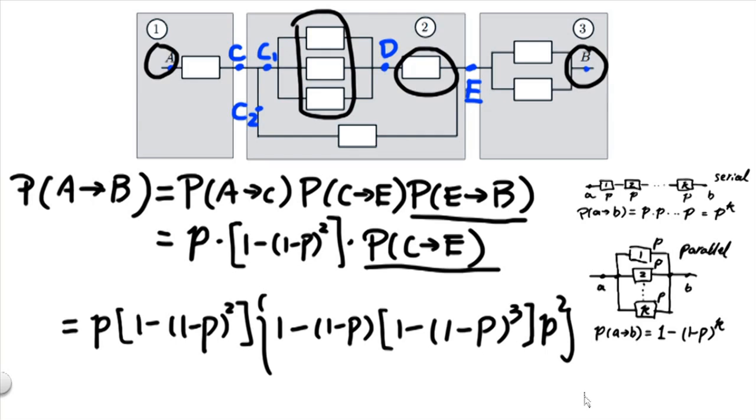Now in summary, in this problem we learned how to use the independence property among different components and to break down the entire fairly complex network into simple modular components and to use serial and parallel connections to put the probabilities back together to compute the overall success probability of finding a path from A to B.